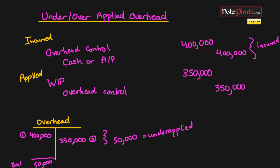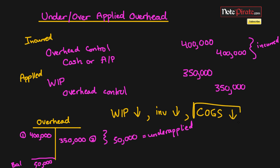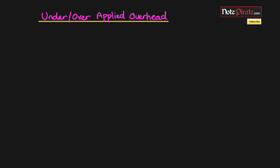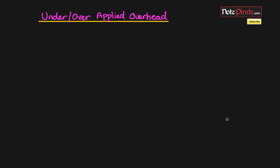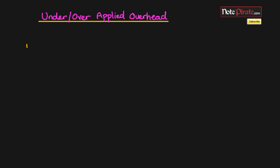Since we did not apply enough overhead, our work in process is going to be less than it actually should be. We only debited $350,000 when it should be $400,000, so it's understated. Because of that, our inventory will also be understated and our cost of goods sold will also be understated — which gives you an idea of what we might adjust. So the next part is the adjustment for under or over applied overhead.